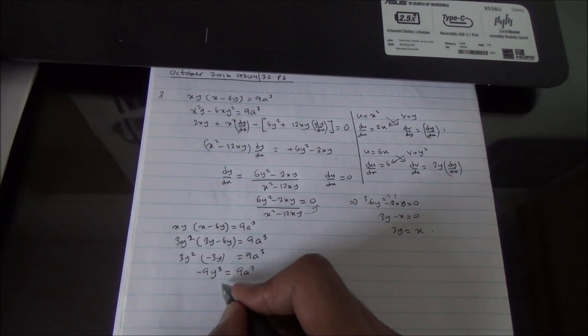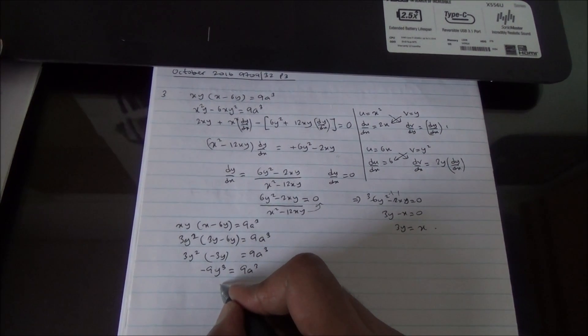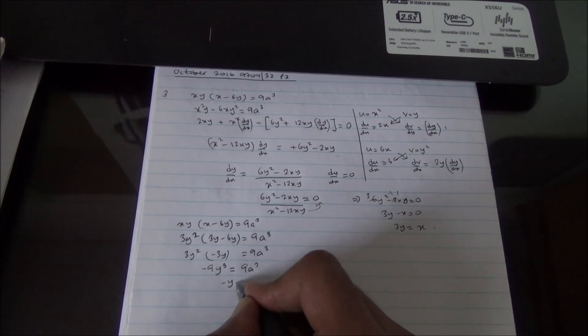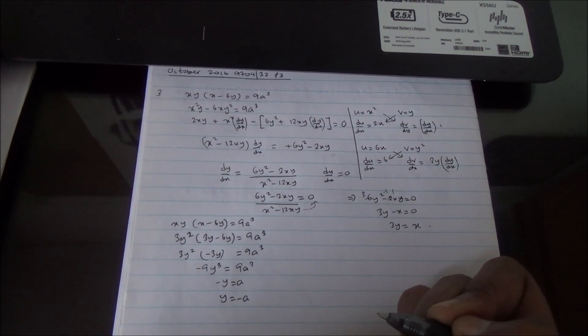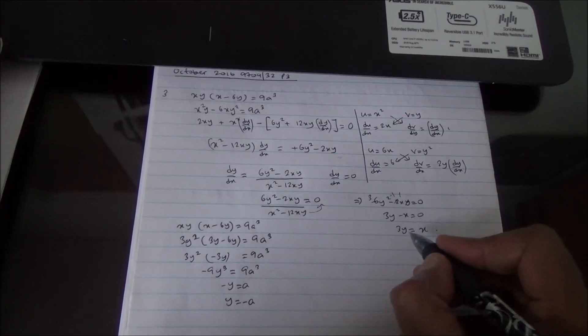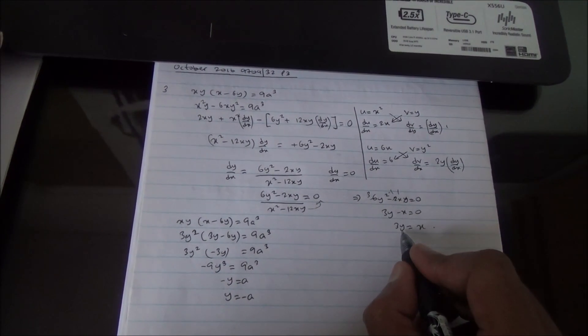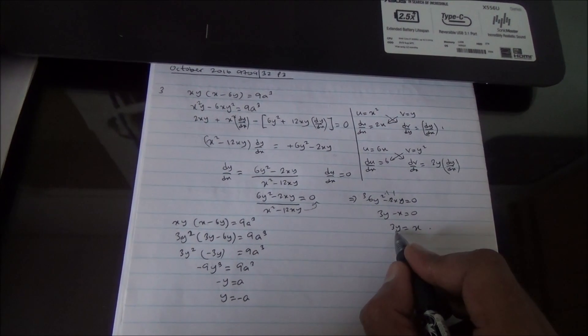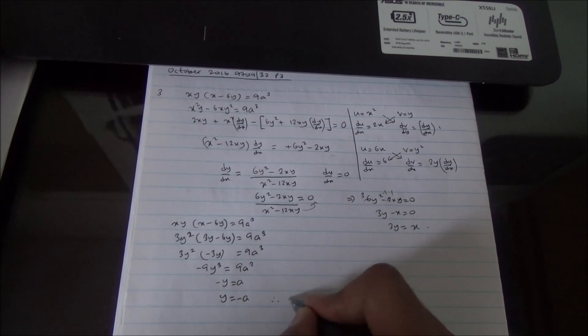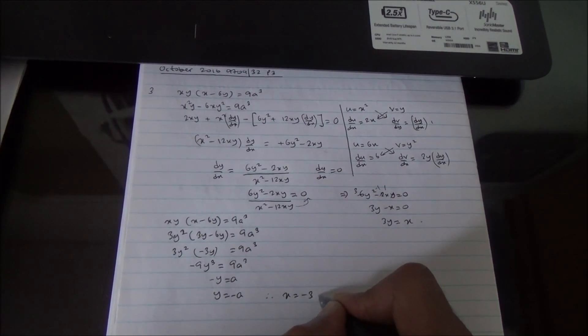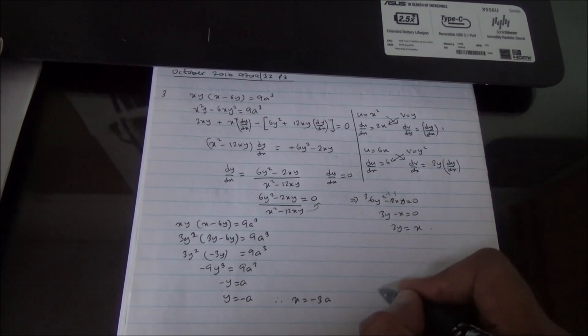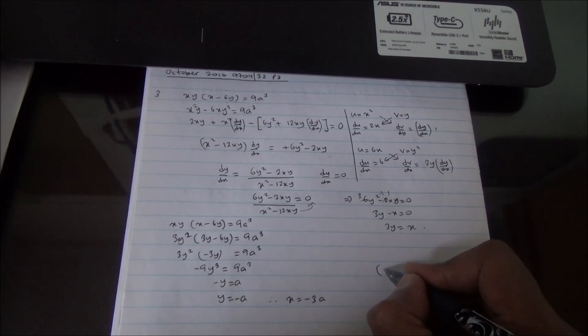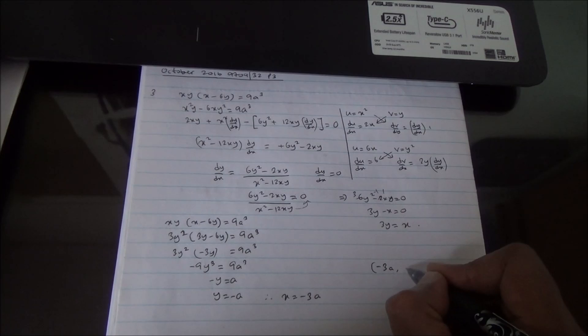So, the 9 can go. The cube and cube can go. So, I'm left with minus y is equal to a. That means y is equal to minus a. So, if y is going to be equal to minus a and x is equal to 3y, therefore, x is going to be equal to minus 3a. So, we are sitting with a coordinate like this.